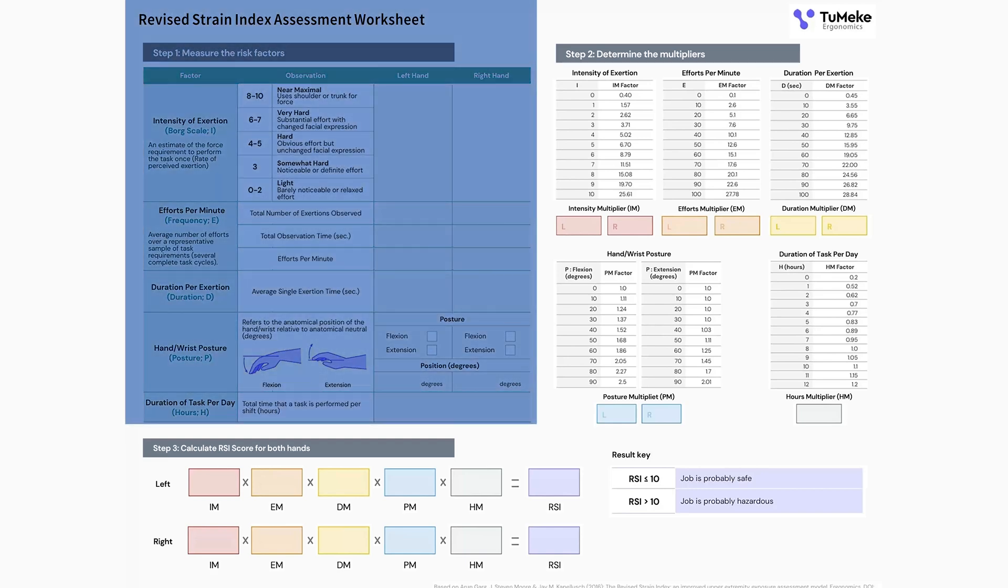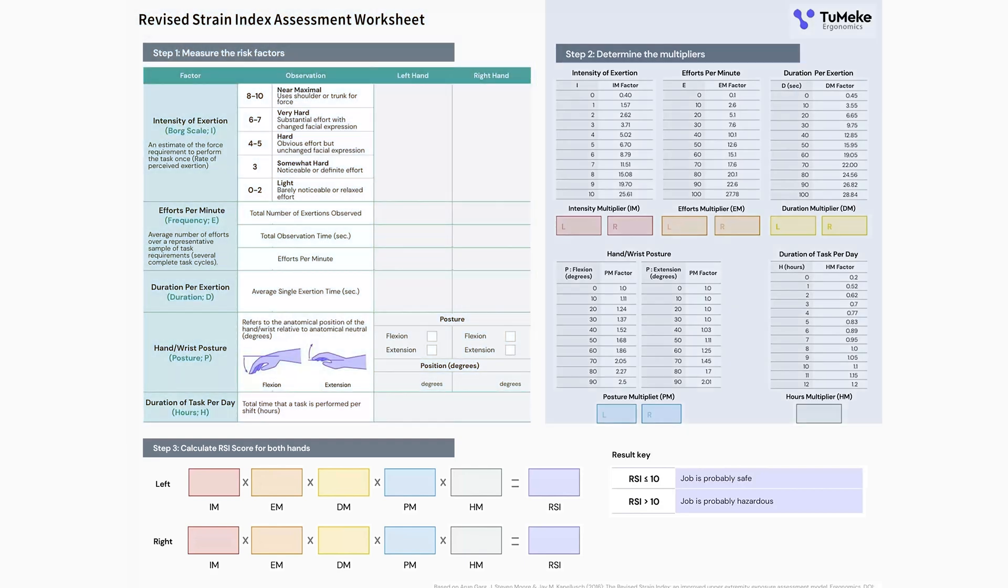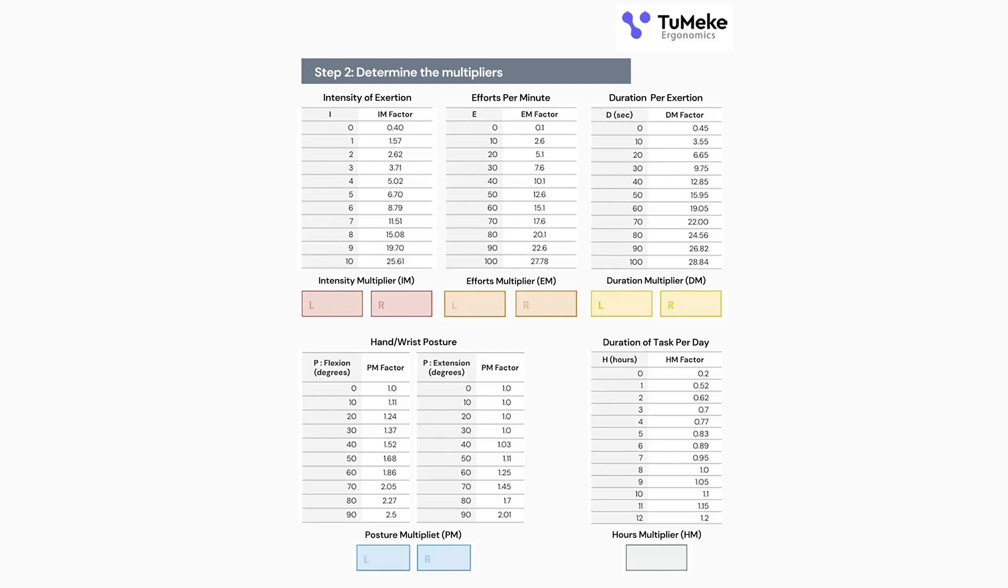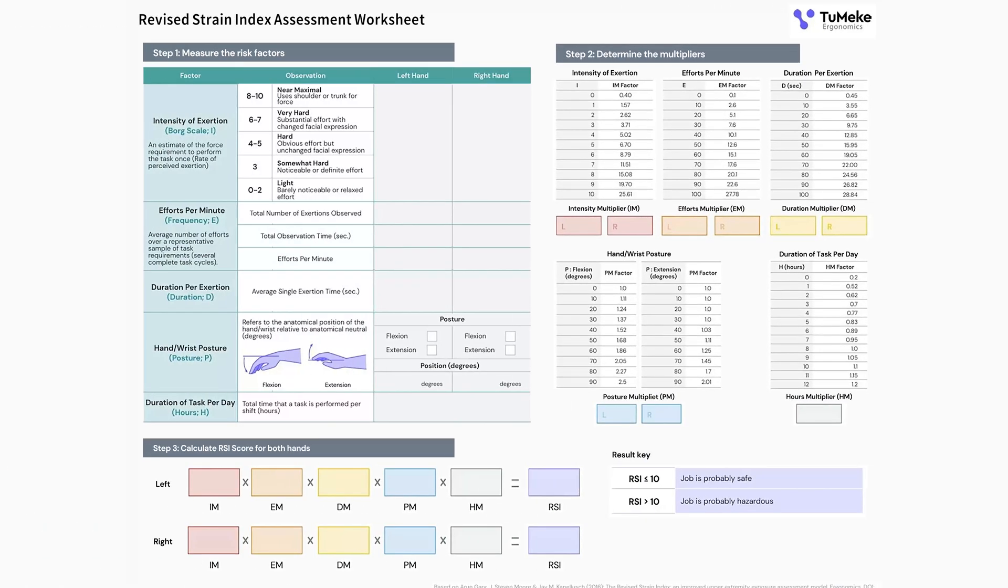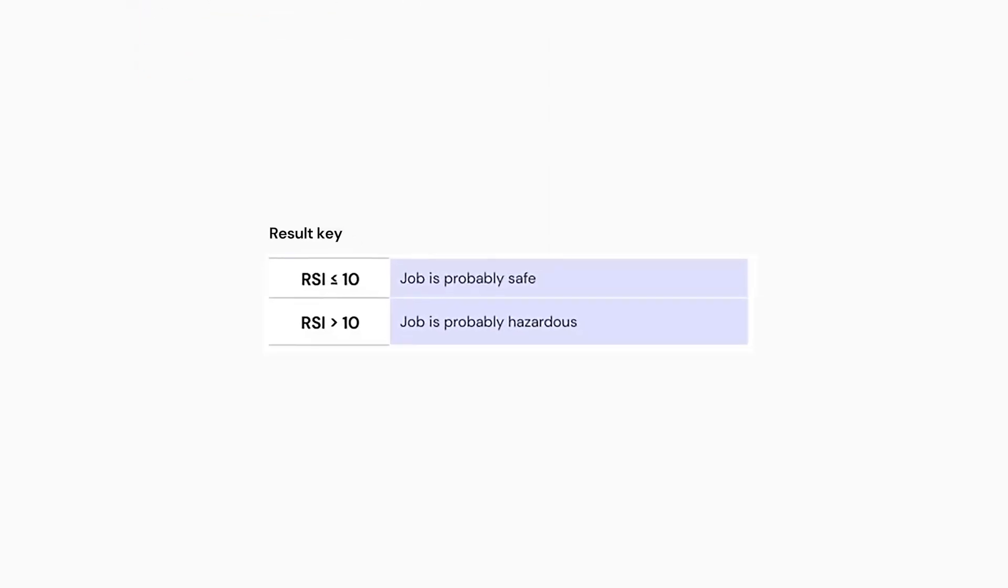Those will go into step one in the upper right-hand area. And then we take those measurements and we drag them into the conversion tables in step two. We work through these conversion tables to get conversion factors on the other end. You'll notice colored boxes in there. We put those conversion factors in those colored boxes, and then we match up those colored boxes with the same colored boxes in step three, down at the bottom, lower left-hand quadrant. We plug those conversion factors into that composite equation. This gives us a calculation, a score, which essentially gives us a risk score, whether or not a task is safe or whether it's a hazard.